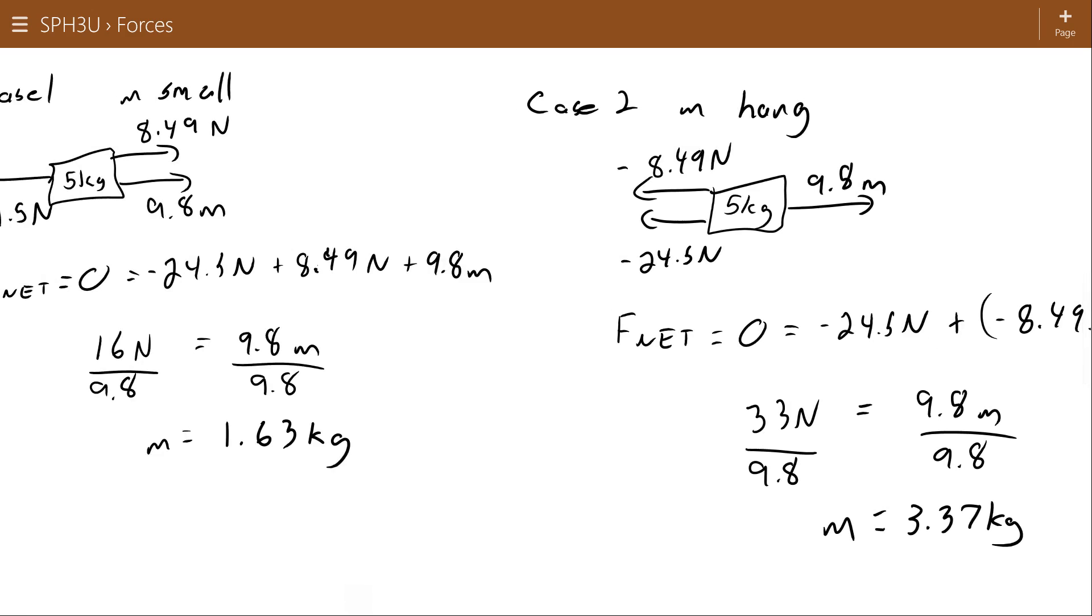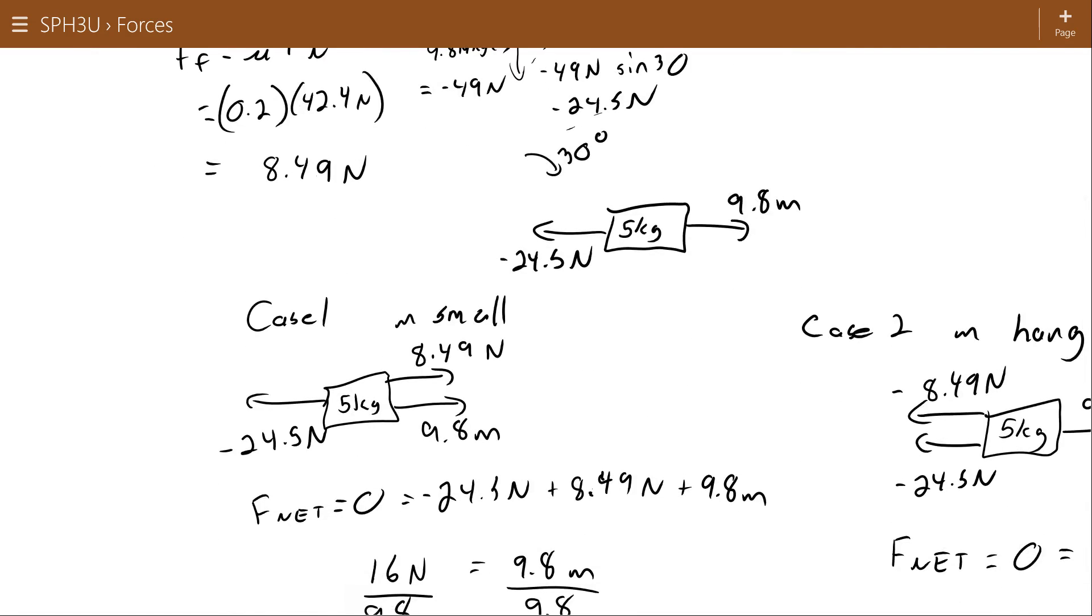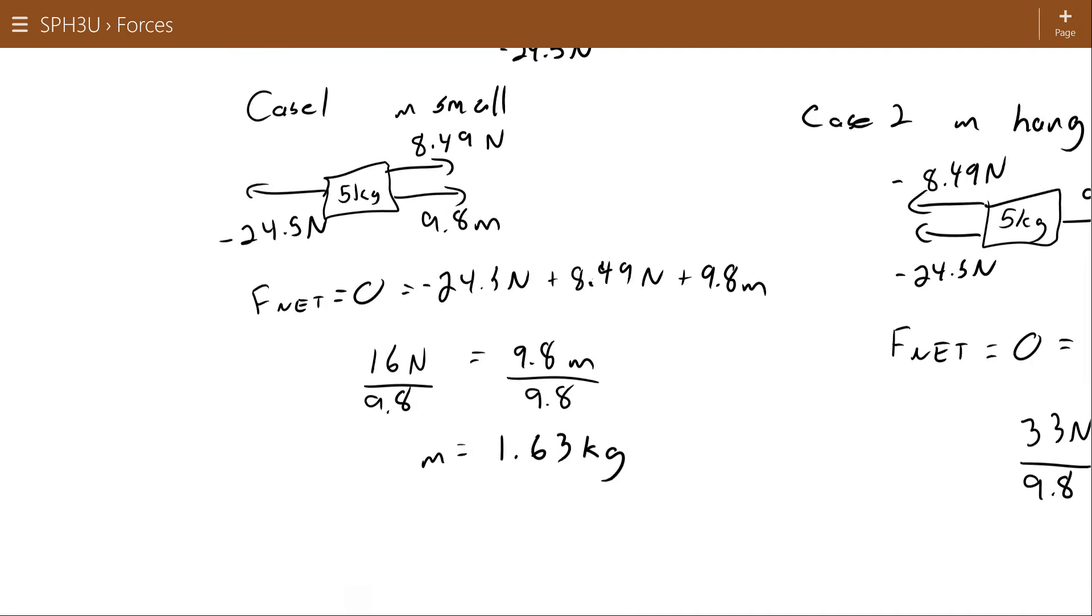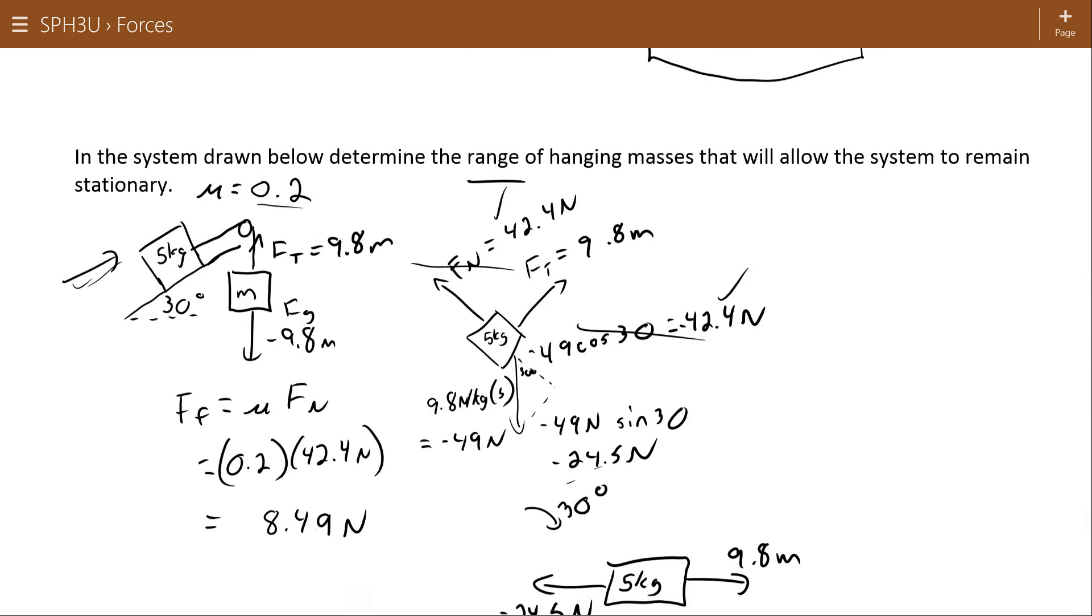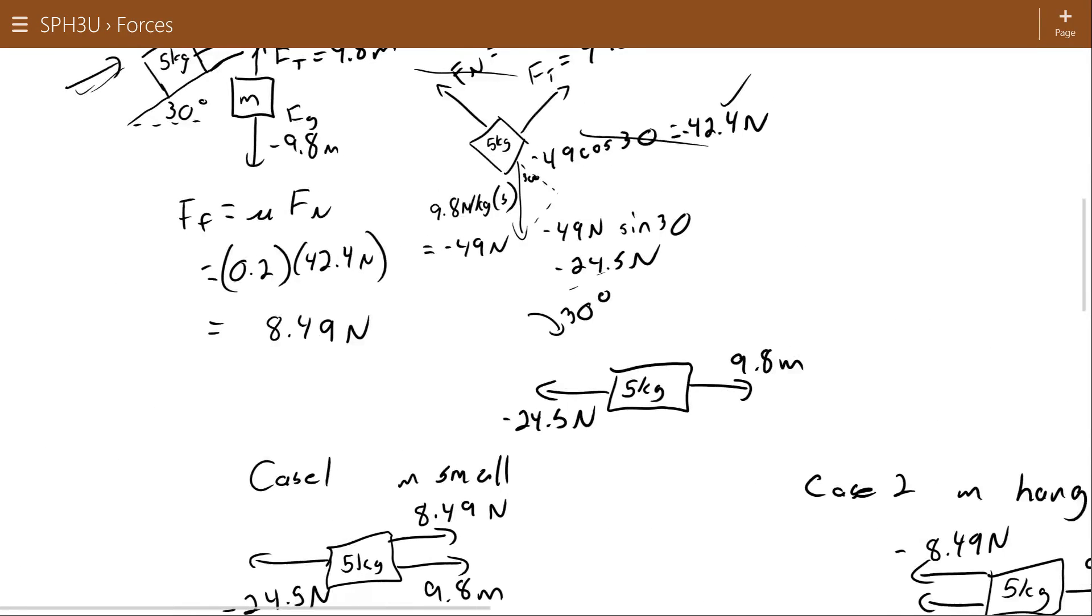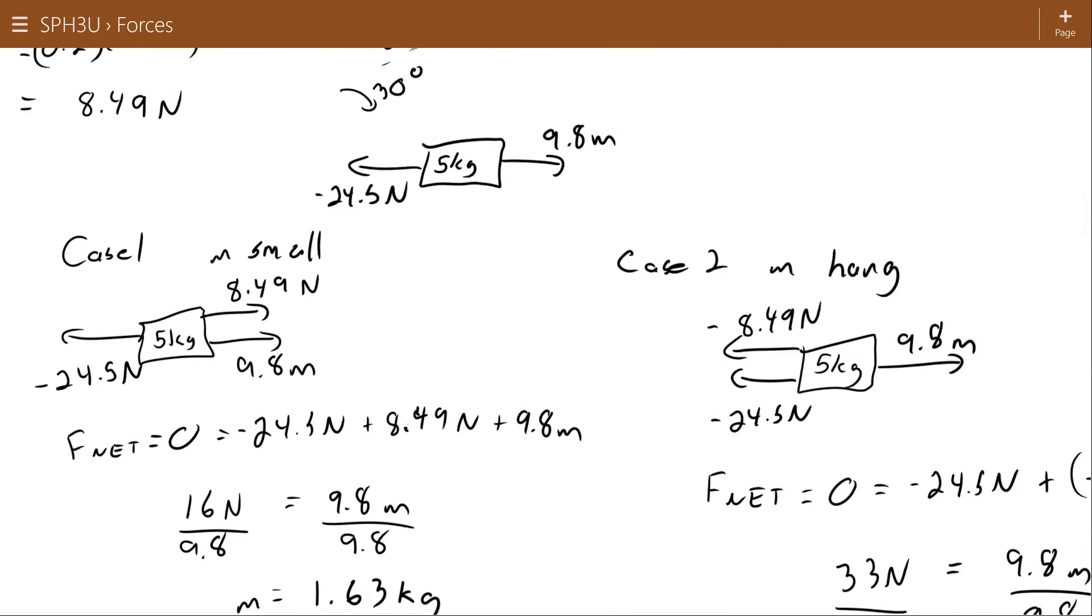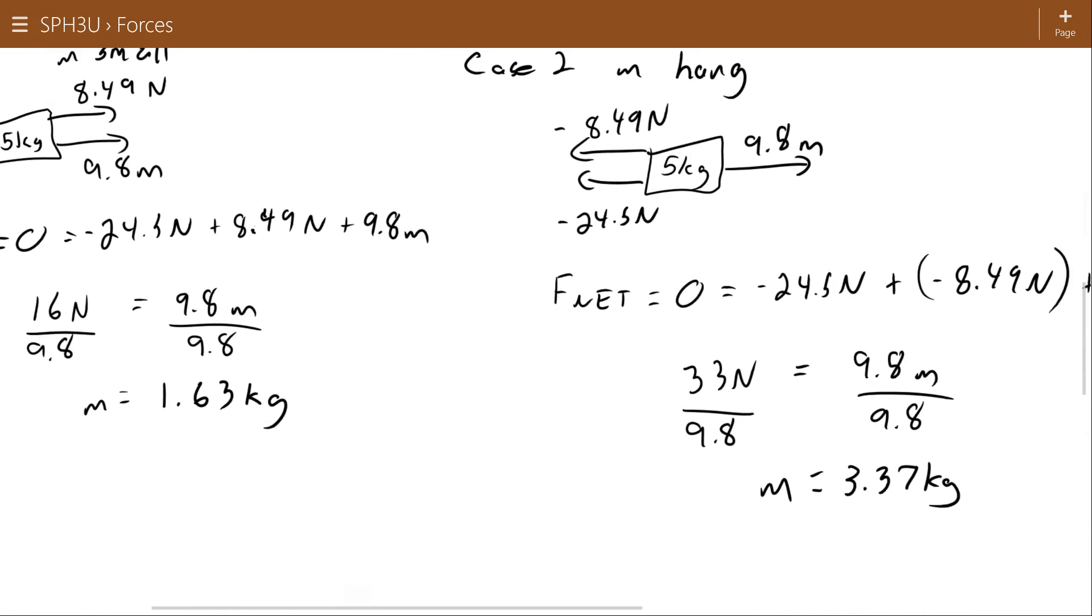So what does that mean? Well, if the mass hanging here is very light, then the 5 kilogram tries to go down, the force of friction resists it, and any mass greater than 1.63 kilograms will be enough to keep the 5 kilogram from falling down the incline. Alternatively, if that mass gets too big, it's going to pull that 5 kilogram up. If I imagine the force of friction working with the gravity on the 5 kilograms, it can resist a mass up to 3.37 kilograms. Which means if the mass is greater than 1.63 kilograms and less than 3.37 kilograms, the system will be stationary.